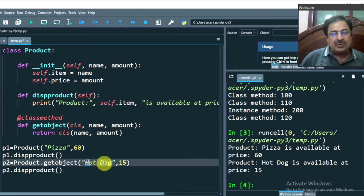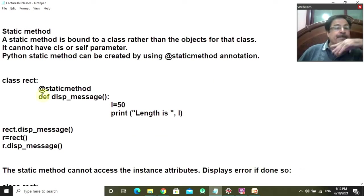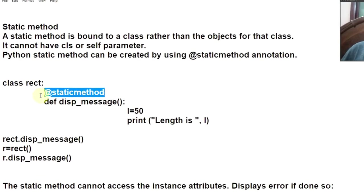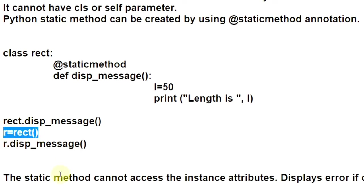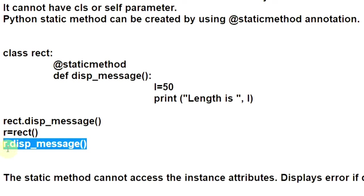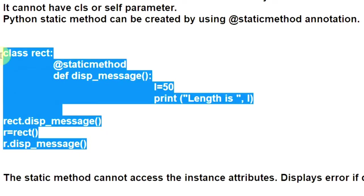Now let us start with static method. Static method is declared by the @staticmethod decorator — you can call it an annotation also. You cannot use self or cls in the static method. This is a simple program with class Rect. LSU is 50, a class attribute meaning length is 50. This is to show that you can invoke a static method through the class and through the instance also. When you invoke the message static method through the class, control comes here and 'LSU 50 length is 50' is displayed. You make an object R of the Rect class and invoke the static method thisMessage — control comes here, 'LSU 50 length is 50' is displayed again. Let us run this program. Length is 50 is displayed twice.